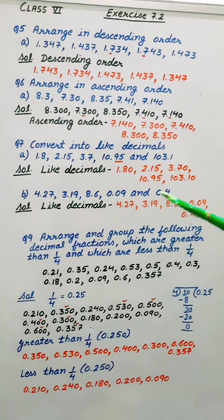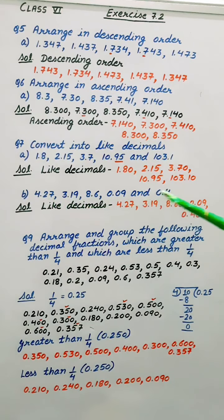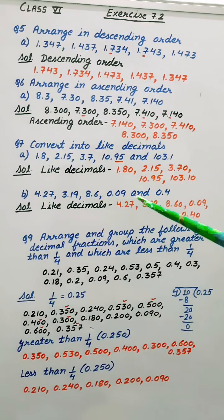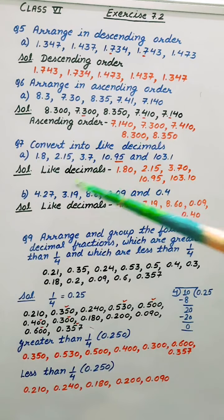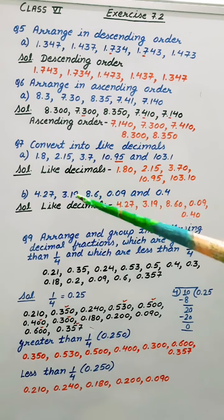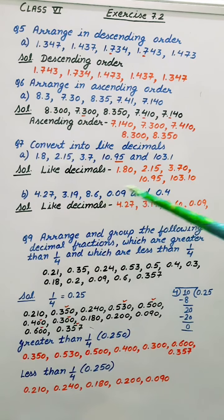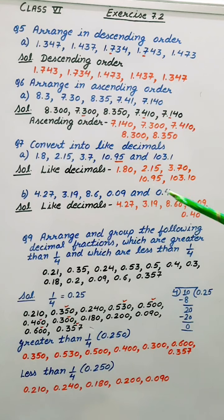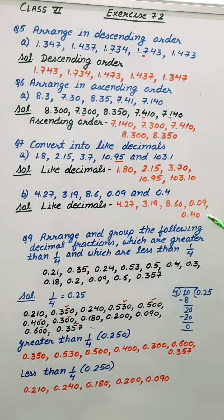Next again. We have to change them into like decimals. So the maximum number of digits after the decimal, they are 2. So 4.27 as it is. 3.19. 8.60. 0.09. 0.40.